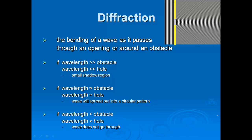Diffraction is when you get bending because it's either going to pass through or around an opening or an obstacle. This diagram shows you light, but it works with sound waves as well as water waves. If the wavelength is greater than the obstacle, or the wavelength is smaller than the hole, you get a very small shadow region. If the wavelength and obstacle are about the same size, you get a nice circular pattern. If the wavelength is smaller than the obstacle or bigger than the hole, it doesn't go through at all.